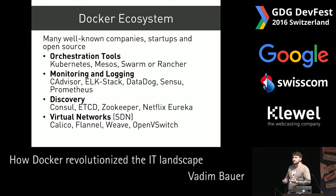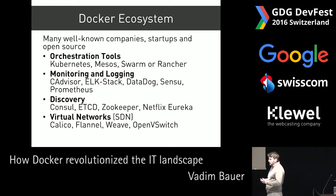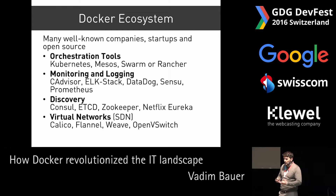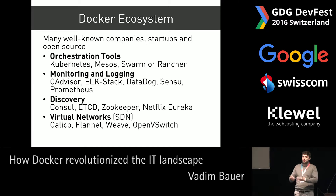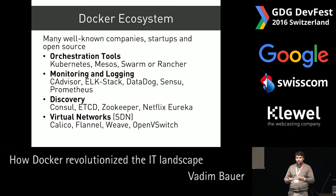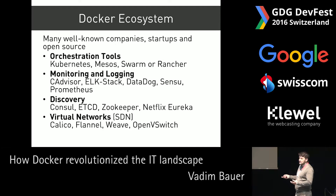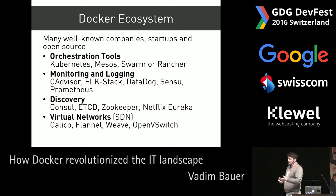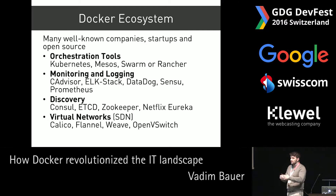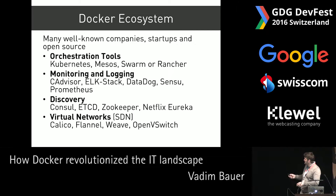There are also tools responsible for service discovery — if you have 100 containers and microservices running and working together, those containers need to find each other, because you cannot just run a container on one node and another on a different node and expect them to communicate automatically. Tools like Consul, etcd, Zookeeper, and Netflix Eureka help you achieve this in the context of Docker. And there are also plenty of tools for virtual networking, so your containers can communicate with each other as if they were on a virtual network.